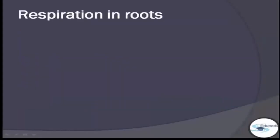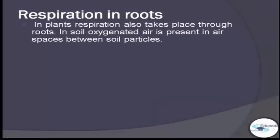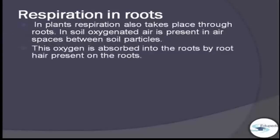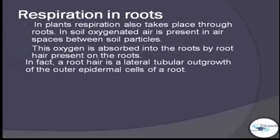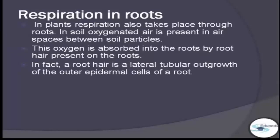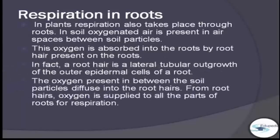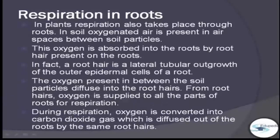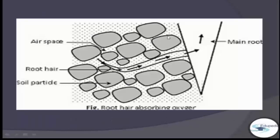For respiration in roots, oxygen in the soil is present in air spaces between soil particles. This oxygen is absorbed into the roots by root hairs present on the roots. A root hair is a lateral tubular outgrowth of the outer epidermal cells of a root. Oxygen present between soil particles diffuses into the root hairs and is supplied to all parts of the roots for respiration. During respiration in roots, oxygen is converted to carbon dioxide gas, which is diffused out through the same root hairs.